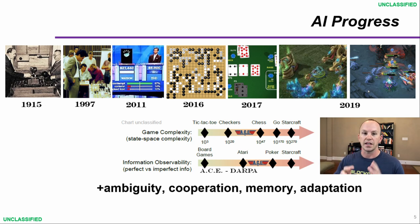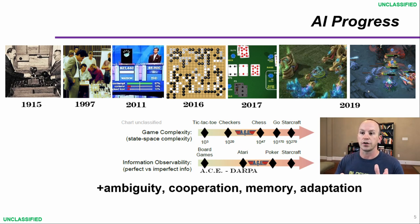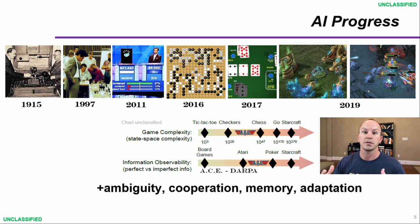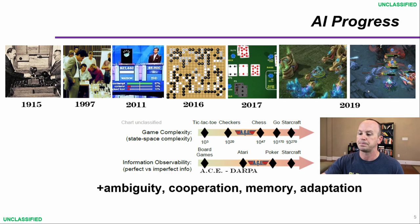Down at the bottom you can see the complexity growth that's occurred — from Tic-Tac-Toe, which isn't very intelligent or complex, through Dota 2 and StarCraft, where the possibilities of moves and actions is almost infinite.